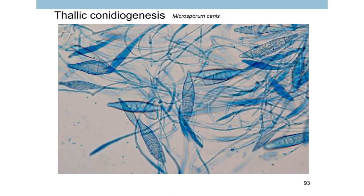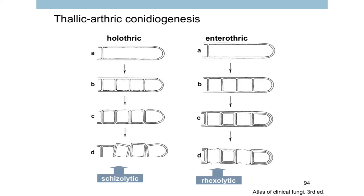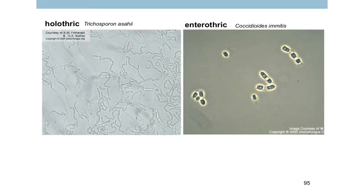Microsporum canis produces its conidia by aleurioconidia. Sometimes fungi do not make such specialization — they just separate: the hypha fragments into parts producing small conidia. If they use the whole layer of the cell wall as the conidium, it is called holothallic; if they use only the inner part of the wall, it is enteroarthric. Trichosporon asahii gives rise to its conidia by fragmentation, so these conidia look like bricks — these are arthroconidia. The right-hand side shows the notorious Coccidioides immitis, which has barrel-shaped arthroconidia.